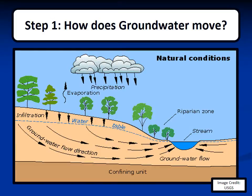This diagram shows the movement of groundwater in natural conditions. As one might expect, groundwater naturally moves from areas with higher water table elevations to areas of lower water table elevations. In this diagram, water is recharged to the groundwater system by percolation from precipitation, and then it flows to the stream through the groundwater system. One important concept to note is the riparian zone, which is the interface between land and a river or stream.